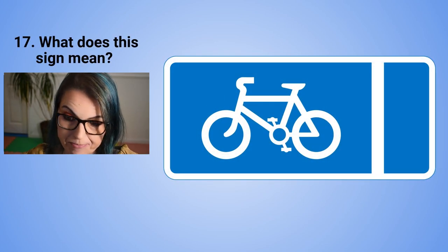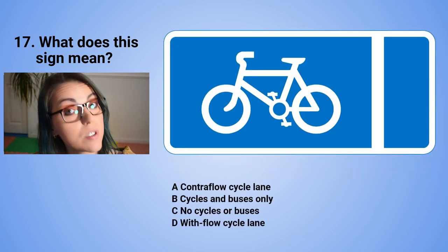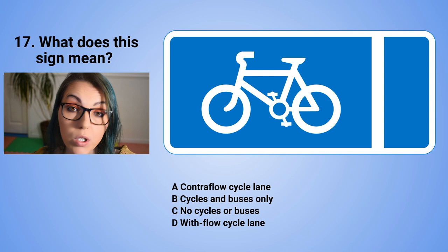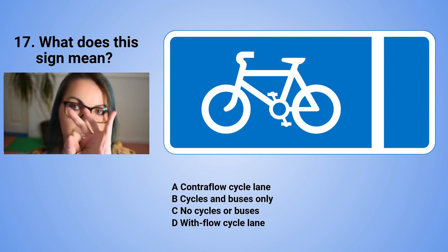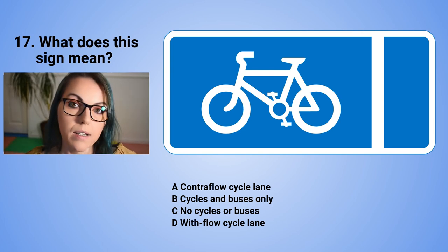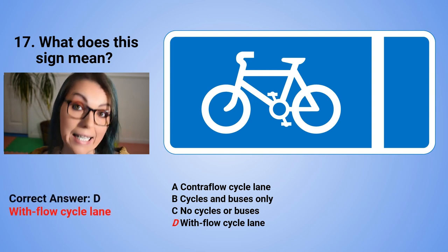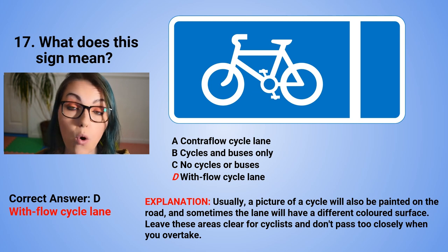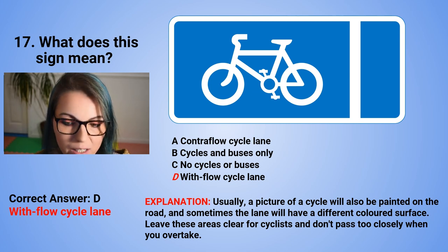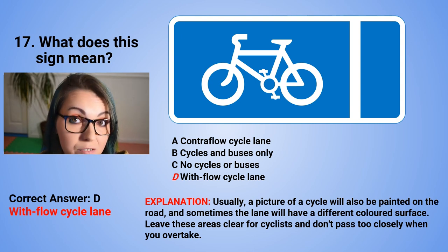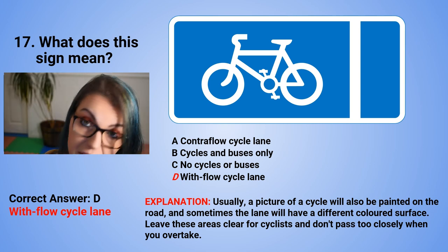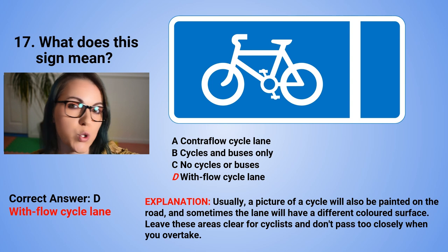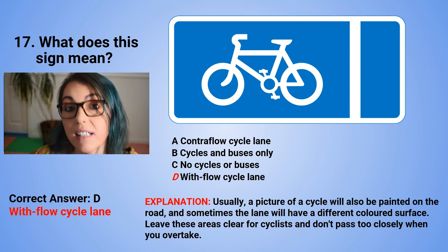Question 17: What does this sign mean? A. Contraflow cycle lane. B. Cycles and buses only. C. No cycles or buses. Or D. With-flow cycle lane. The correct answer is D — with-flow cycle lane. Usually a picture of a cycle will also be painted on the road, and sometimes the lane will have a different coloured surface. Leave these areas clear for cyclists and don't pass too closely when you overtake — a bicycle is much lighter than a car, so passing closely at speed could cause cyclists to lose their balance.